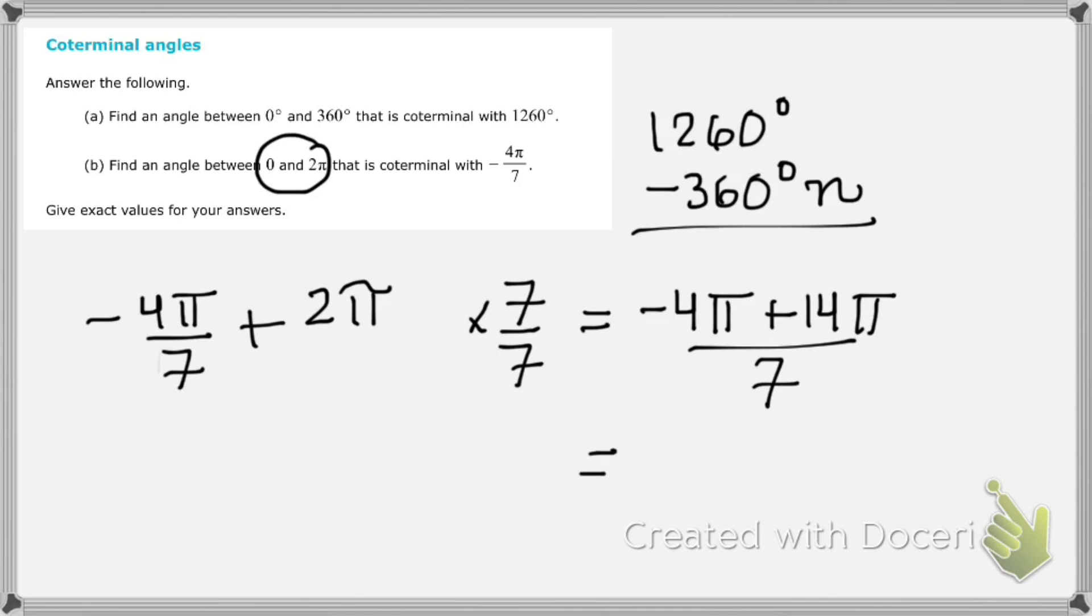And then it's simply negative 4 plus 14 is 10. And then they have the π in common. It's like terms over 7. And we got to the same place, right? 10π over 7.